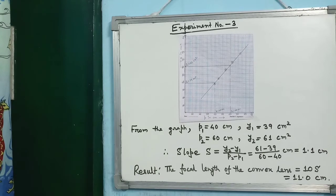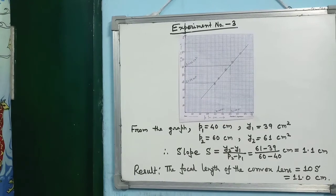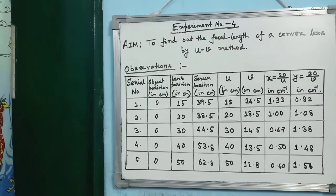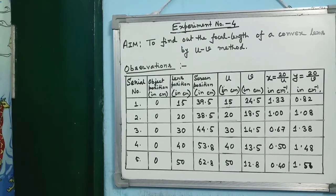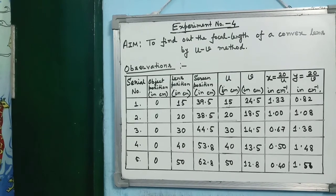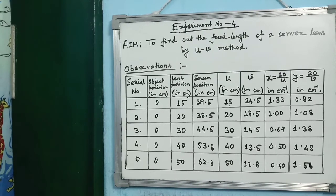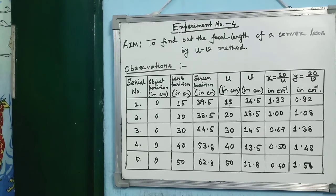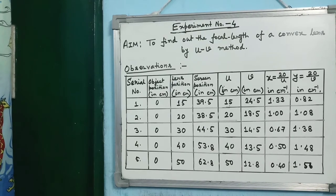Experiment number 14: find the focal length of a convex lens by the u-v method. The method is exactly the same; only the calculation part is different. In the observation table, object position is always zero, lens positions are 15, 20, 30, 40, 50, and the screen positions obtained are 39.5, 38.5, 44.5, 53.8, 62.8. u is lens position minus object position: 15, 20, 30, 40, 50.